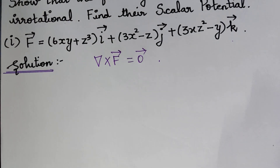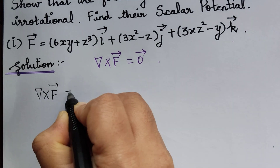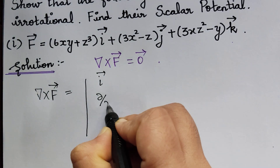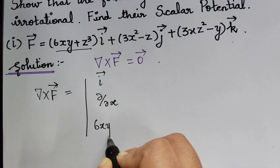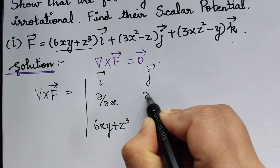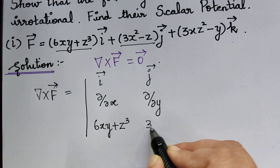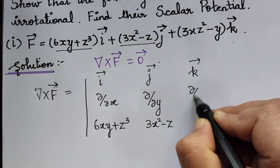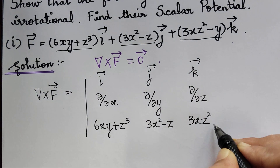We know that nabla cross f vector is given by the determinant value of i vector, where we have ∂/∂x and the i-th component 6xy + z³. Then j vector, ∂/∂y, and the j-th component 3x² − z. And k vector, ∂/∂z, and the k-th component 3xz² − y.